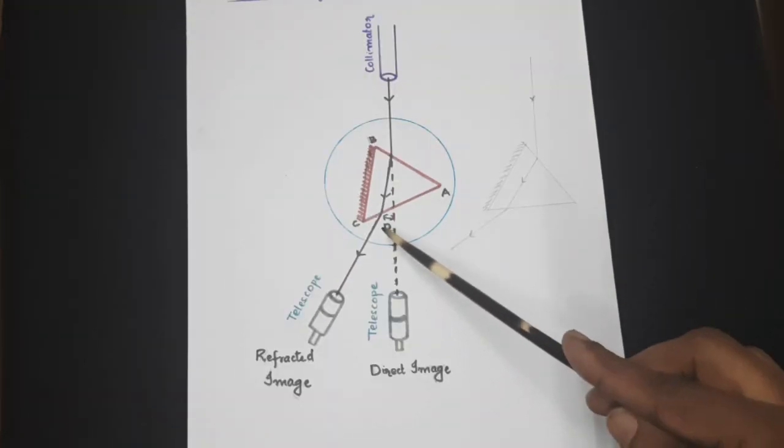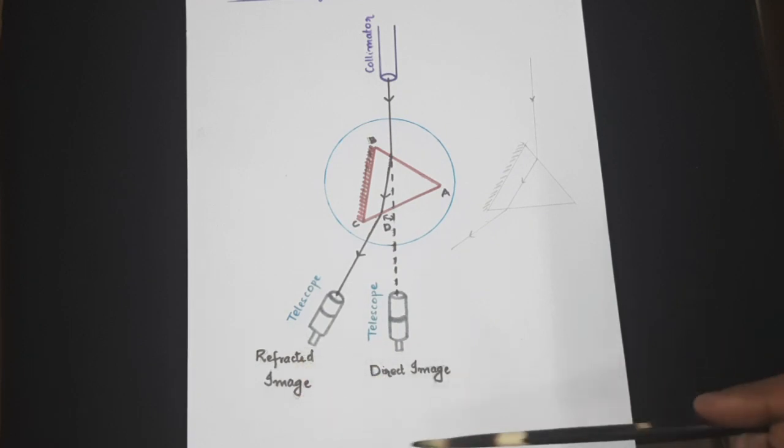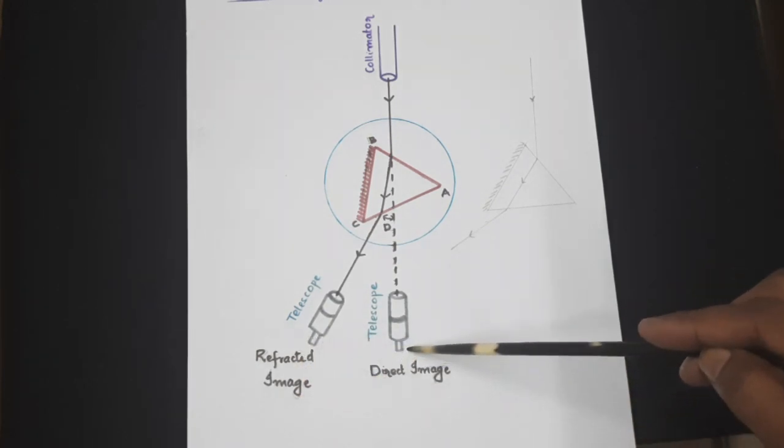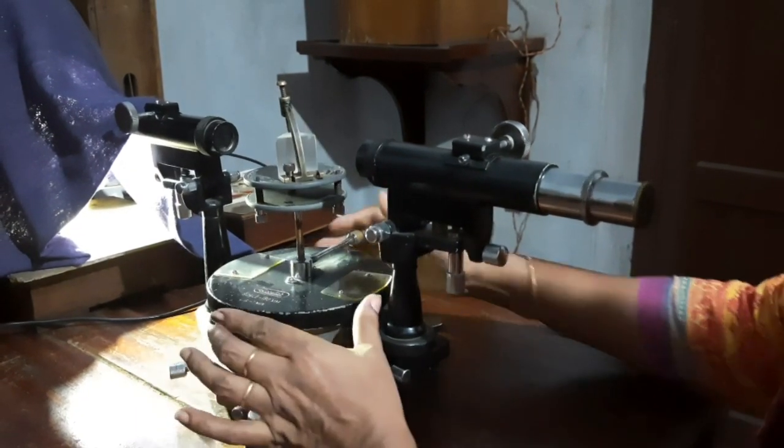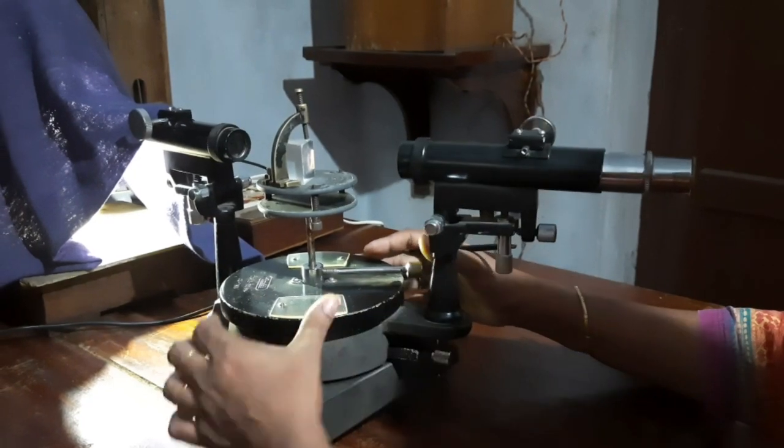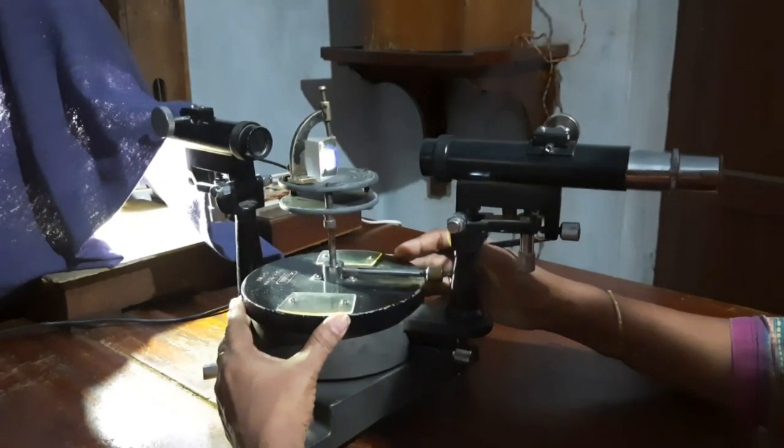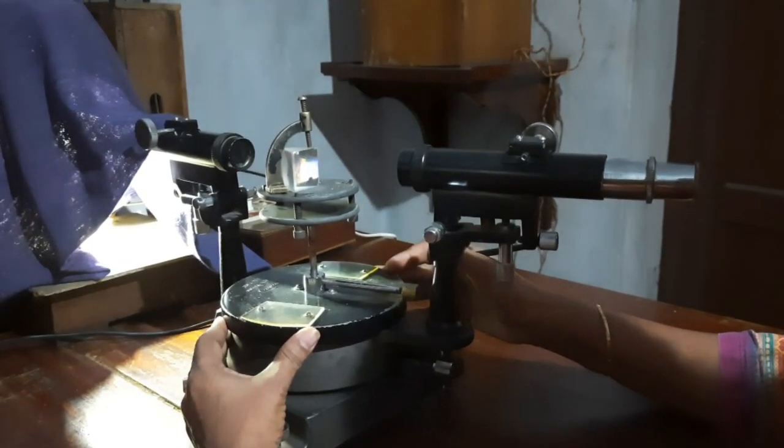Now take the reading of Vernier 1 and 2 of this refracted image, then turn it to the direct position and take the Vernier 1 and 2 reading of the direct image. So here we have to set the prism in such a way that the light enters the prism and gets refracted onto the other side. So the angle of incidence should be kept as acute.